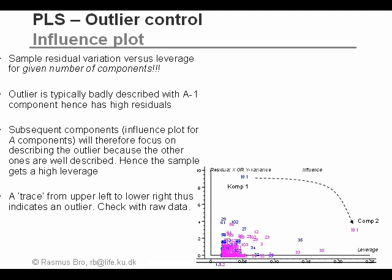As for PCA, we can do influence plots, and these can be helpful for detecting outliers. The influence plot plots the residual variance versus the leverage. Residual variance of a sample tells us whether that sample has been described well by the model. Leverage tells us how extreme the sample is within the model. What we typically see — as shown in the lower right plot — is that at component 1, sample 101 has a very high residual variance. When we extract the first component, what remains to be described is mainly sample 101. Therefore, component 2 will focus on describing sample 101, and in the two-component model, this sample will move to the high leverage direction in the plot — that's typical for an outlier.